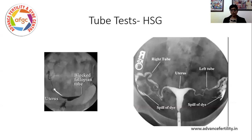Now how do we know that the tubes are blocked? Usually the first test that is done is called a hysterosalpingogram or an HSG. It's a procedure where a dye is inserted internally and pushed through the uterus — it's supposed to come out through the fallopian tubes and outside. So if there is spillage like this, it's called that the tubes are patent.